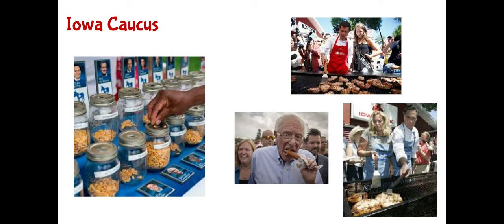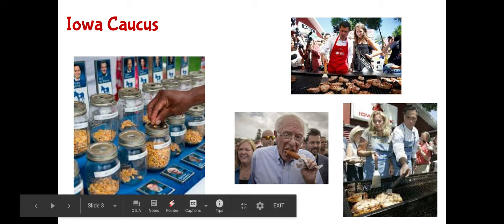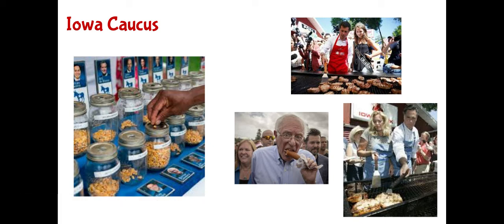Moving on to the Iowa caucus — Iowa is a conservative state that has a big state fair in the summer. All the candidates descend upon the state to campaign literally everywhere, from high school weight rooms to local libraries to someone's living room or backyard. They also go to the state fair. On the left-hand side you see about 20 mason jars affiliated with different candidates, and people put a corn kernel in the jar — very Iowa. On the right-hand side, candidates are getting up close and personal with Iowans, flipping burgers, eating corn dogs, baking chicken. We have Bernie Sanders and Pete Buttigieg from this past summer, and Mitt Romney going into the 2012 election.